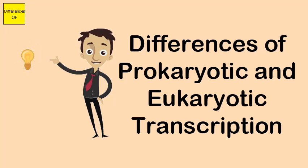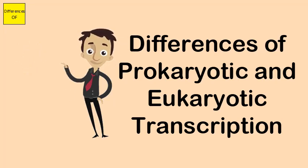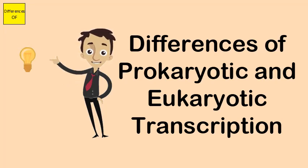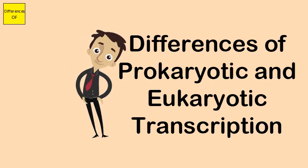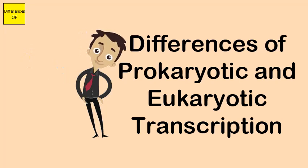In prokaryotic transcription, the 23S, 16S, and 5S rRNAs are formed from a single primary transcript. In eukaryotic transcription, the 28S, 18S, 5.8S, and 5S rRNAs are formed from two primary transcripts.